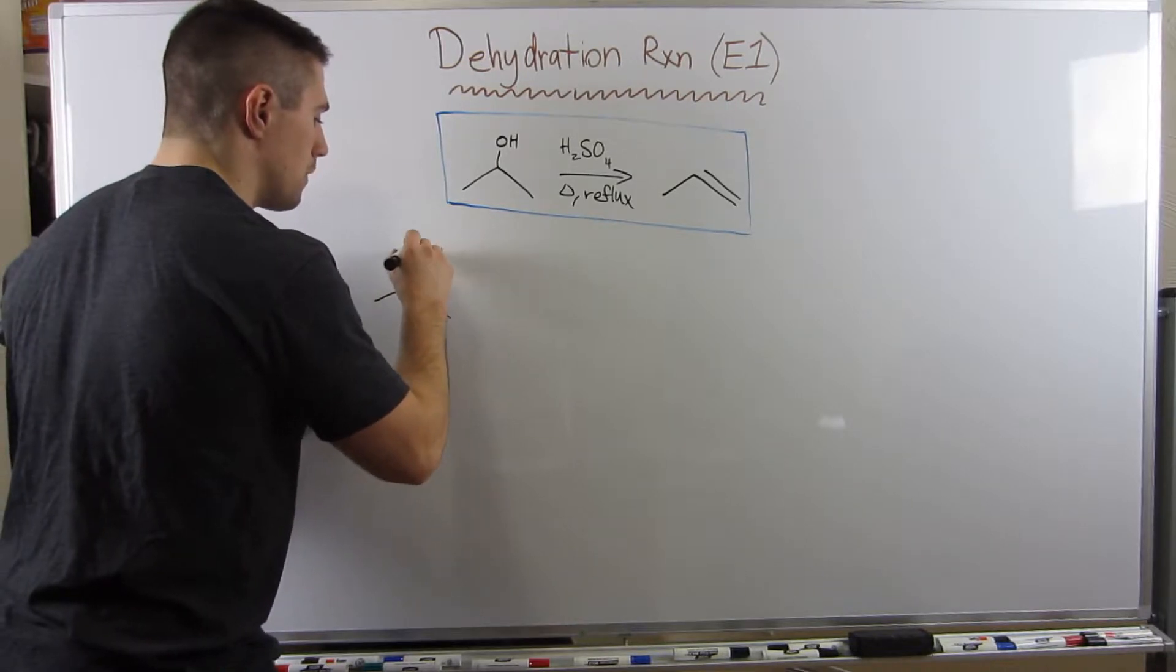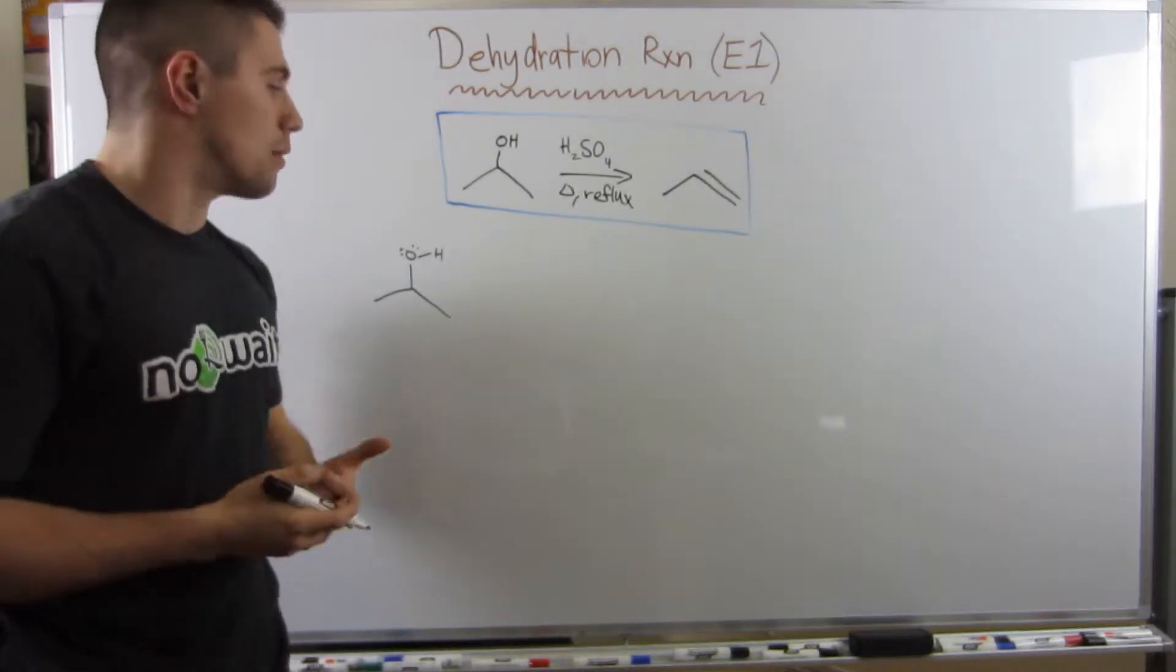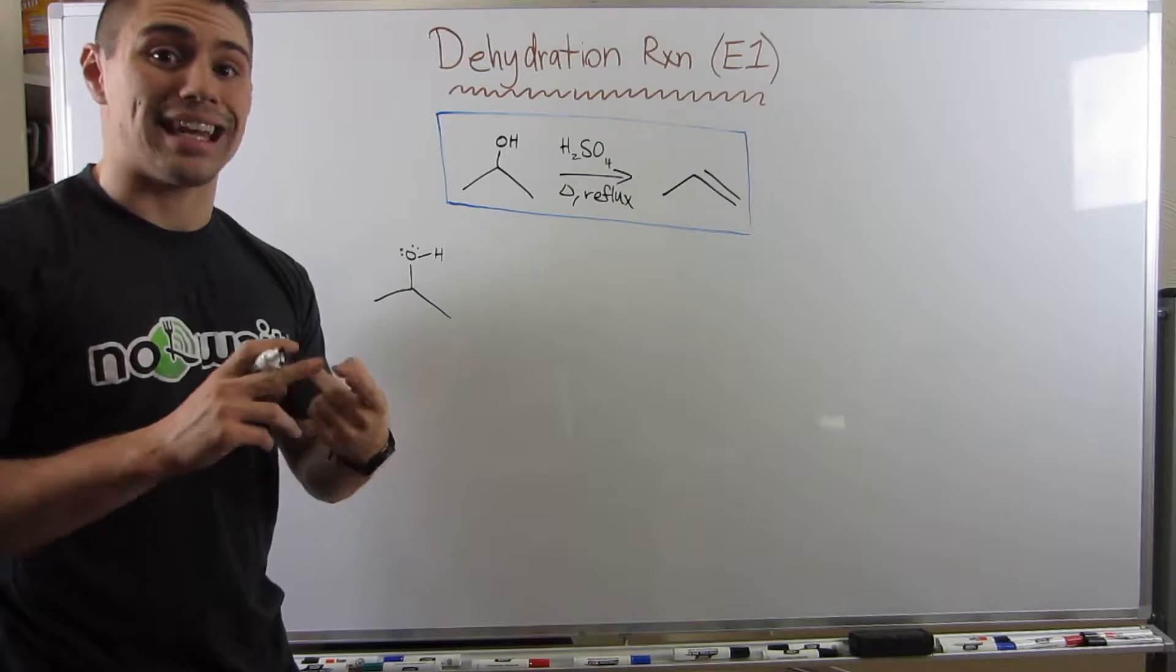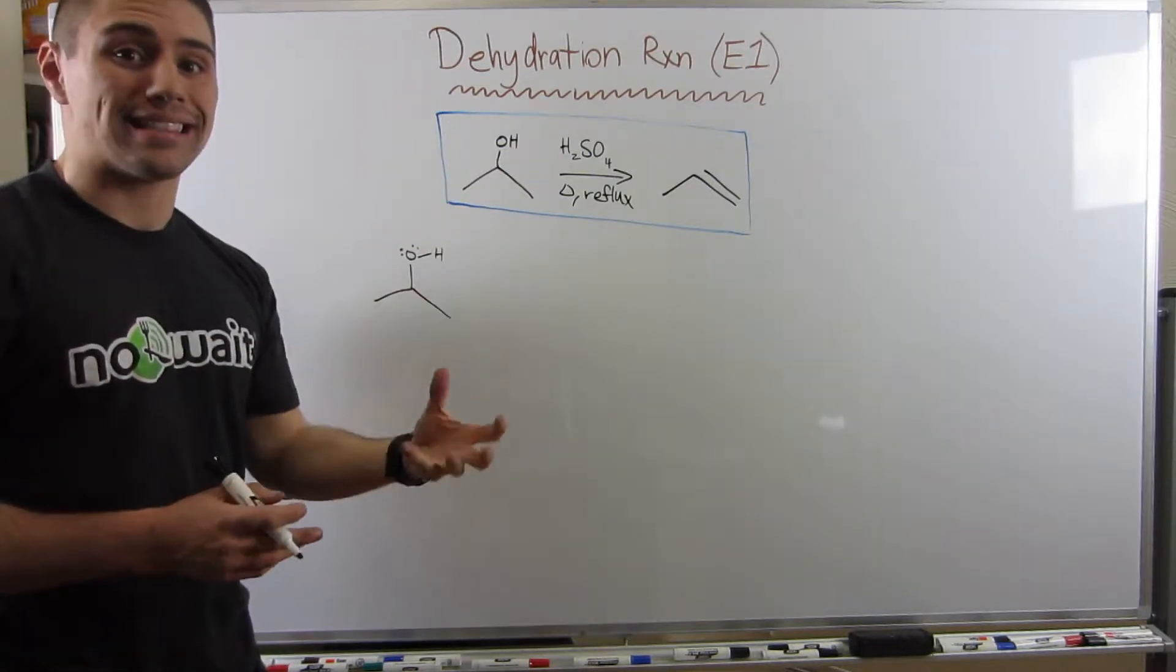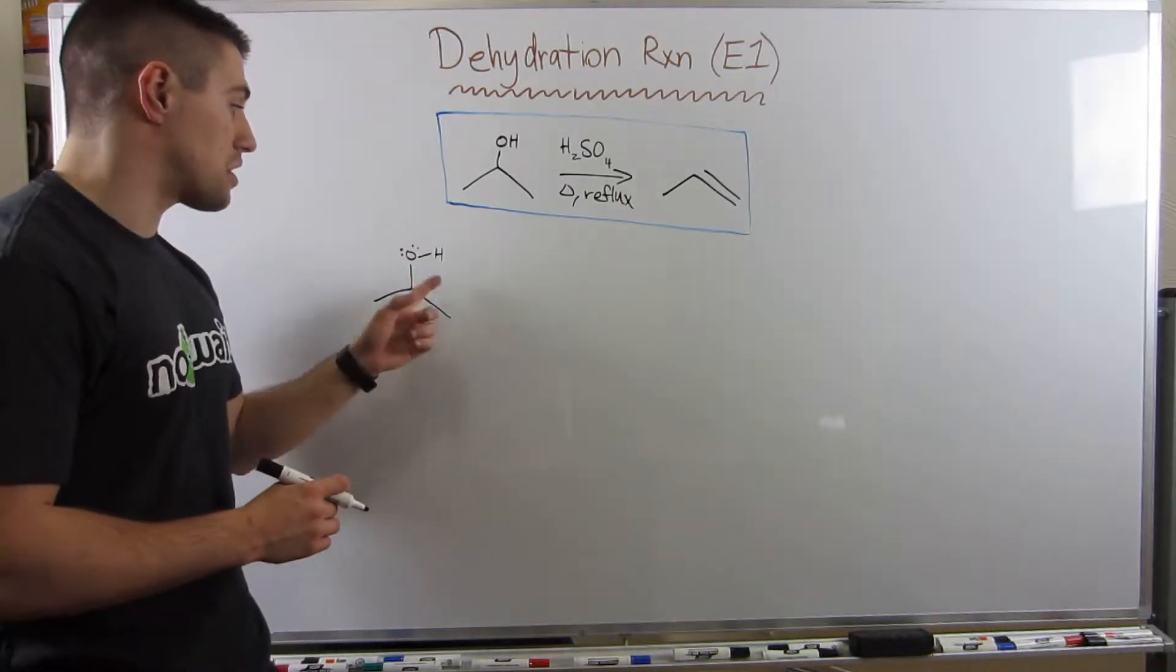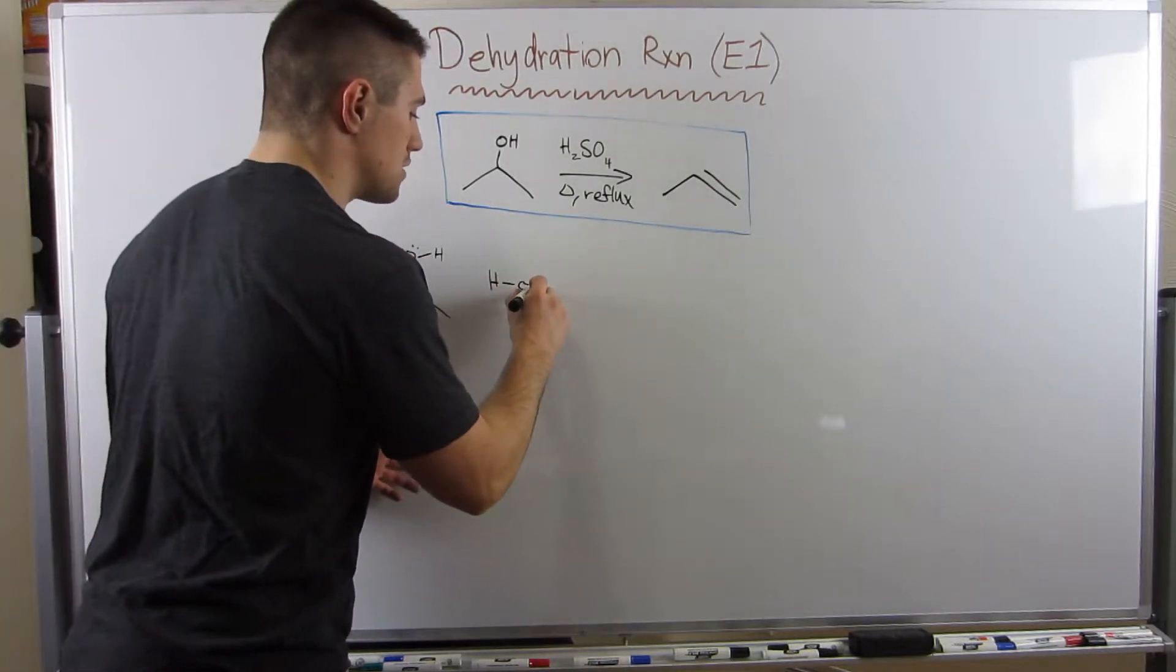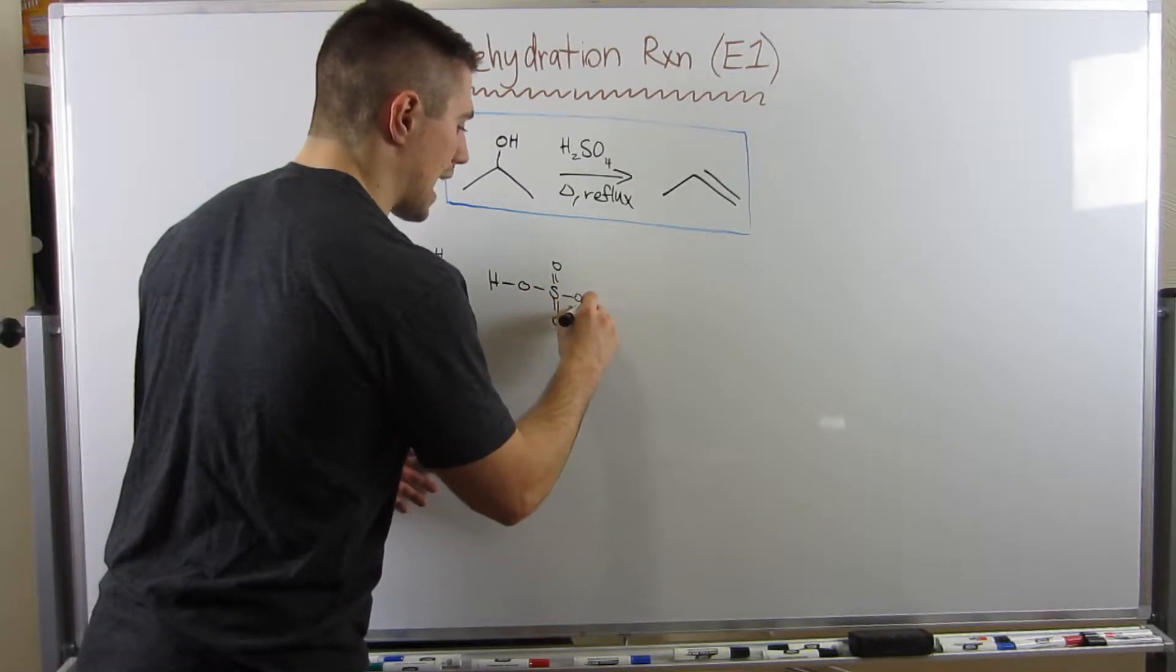Let's draw the mechanism. It gives us a little more insight as to what we're dealing with. So here is the mechanism. Remember, I've said this a bunch and I'm sorry if this is annoying, but remember, alcohol's amphoteric. They can both act as an acid and a base.